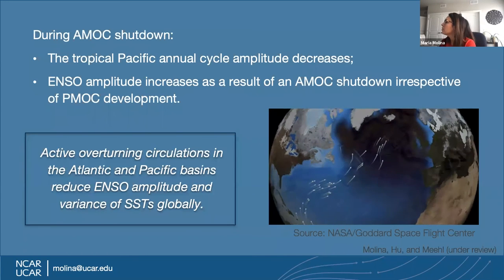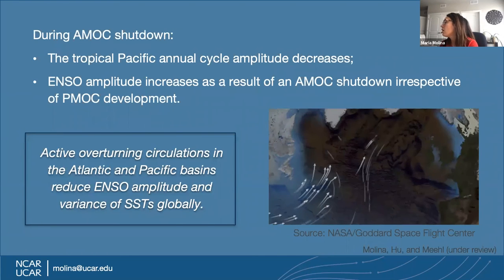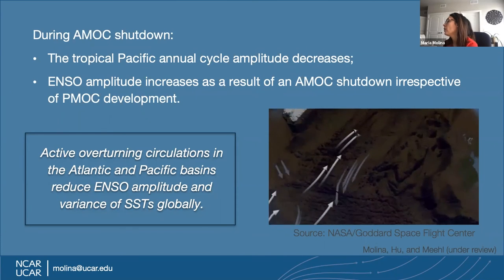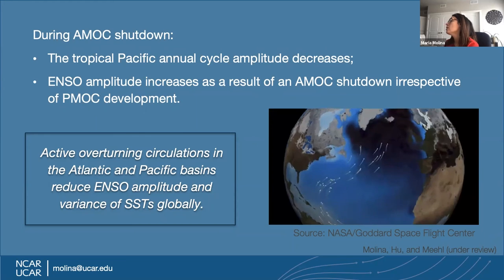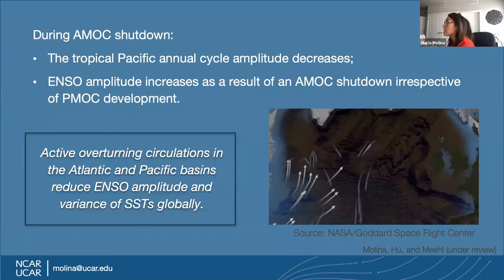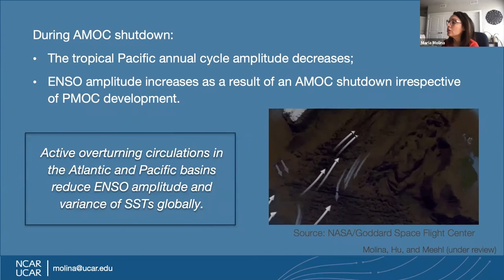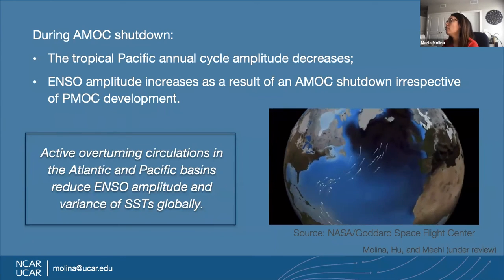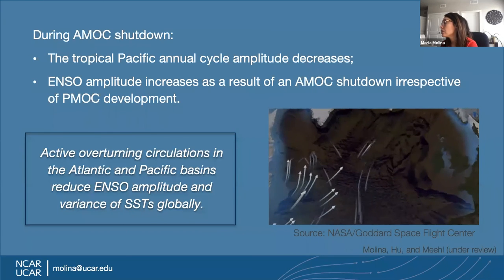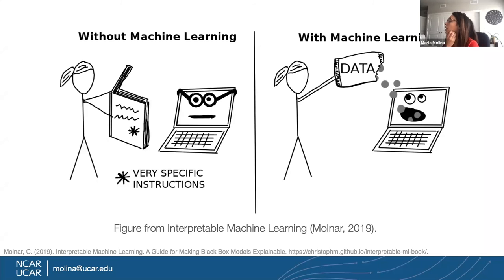To conclude for the first research topic: when the AMOC collapses, we see pretty substantial changes to tropical Pacific sea surface temperatures, and we really see an amplification or strengthening of El Niño and La Niña, which have teleconnections globally. Now I'll share a machine learning project applied to climate variability.